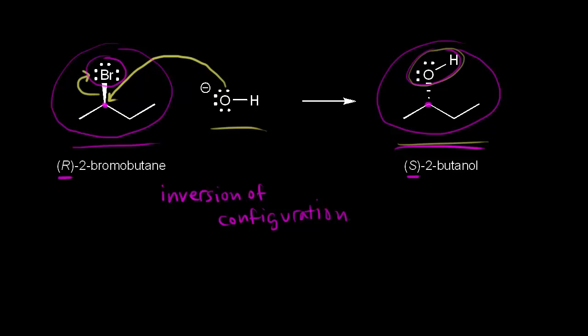The nucleophile can only attack from the side that's opposite of the leaving group, and that's consistent with our SN2 mechanism. One way of thinking about this is that bromine is relatively large and has a large amount of electron density around it with all these lone pairs of electrons. That would repel your negatively charged nucleophile. So your nucleophile has to approach from the side opposite of your leaving group, and that requirement means that you get inversion of configuration.